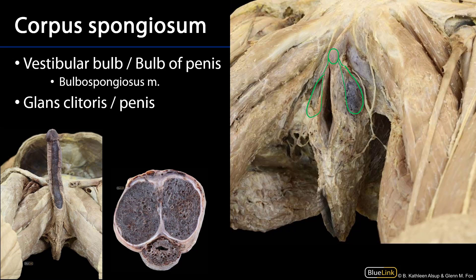Within the penis, the corpus spongiosum derivatives include the bulb of the penis, and the spongiosum continues along the ventral portion of the penis, and then towards the distal penis it expands as the glans penis. Looking here in a transverse section of the penis, we can see the corpus spongiosum, and within it we can see the spongy or penile part of the urethra, which is transmitted through the corpus spongiosum.